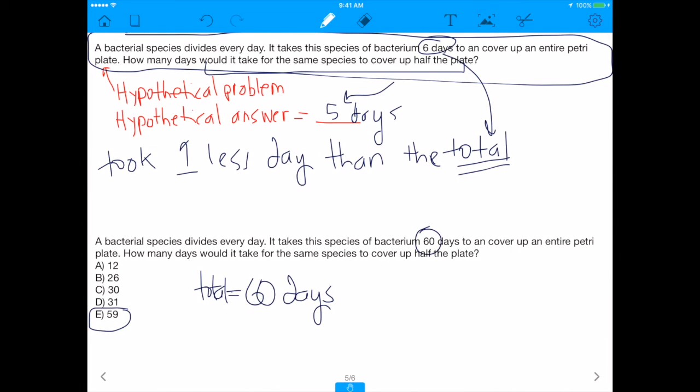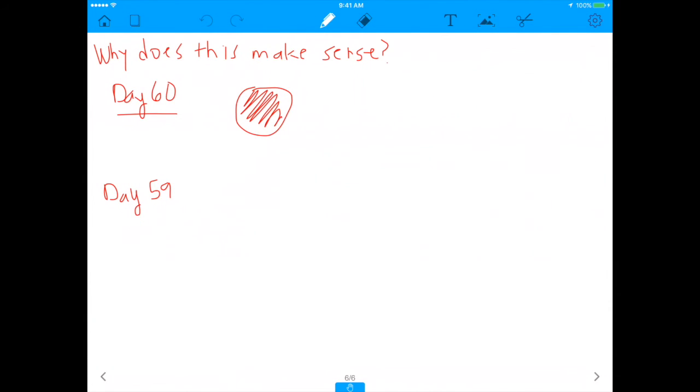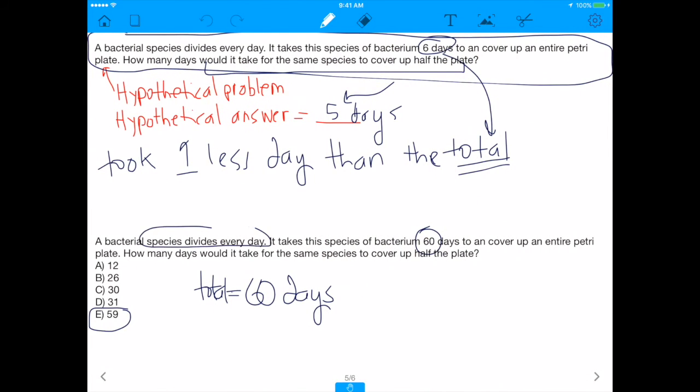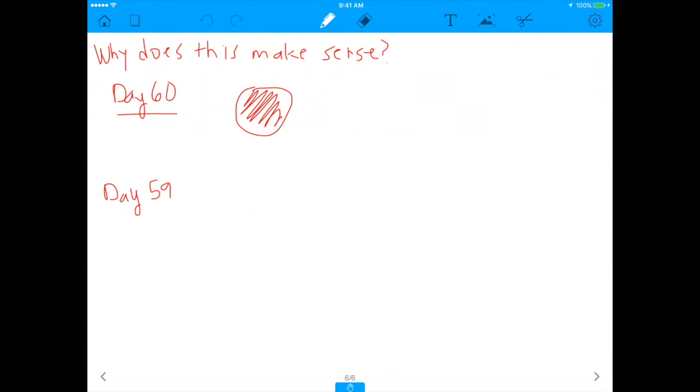Believe it or not, it would take 59 days for the species to cover up half the plate. And why is that? Why does that make perfect sense? Well, now I want you to think of this intuitively, okay? Because the reason it makes sense is, first of all, we're told that this species divides every day, okay? So now I want you to think about this hypothetically. On day 60, we're told that the entire plate is full, right? We have the whole plate filled with bacteria. And we know that it divides every day. So think about what it would look like on day 59.